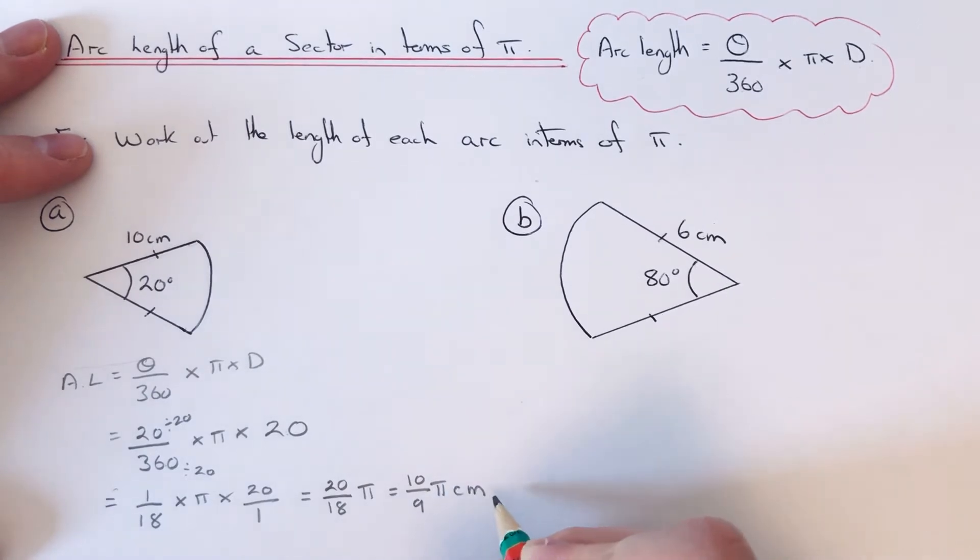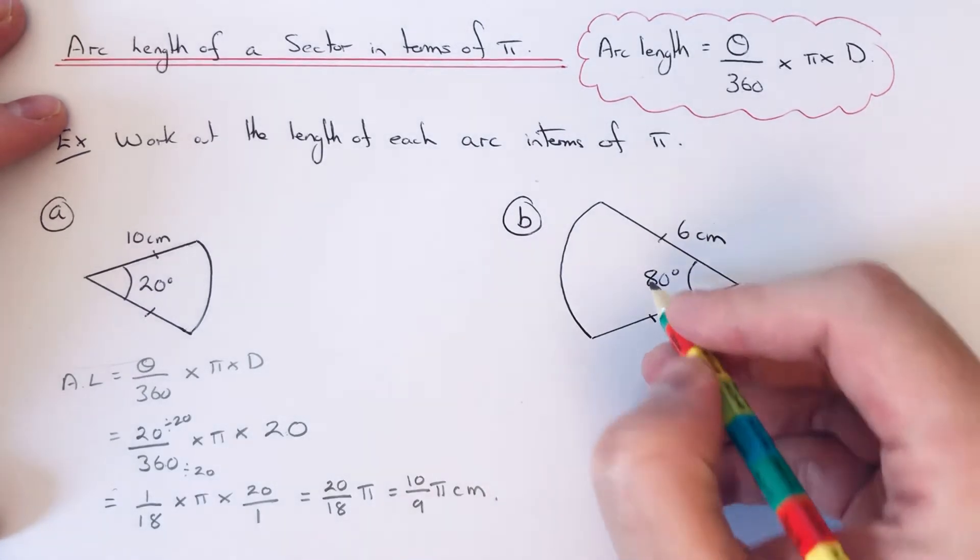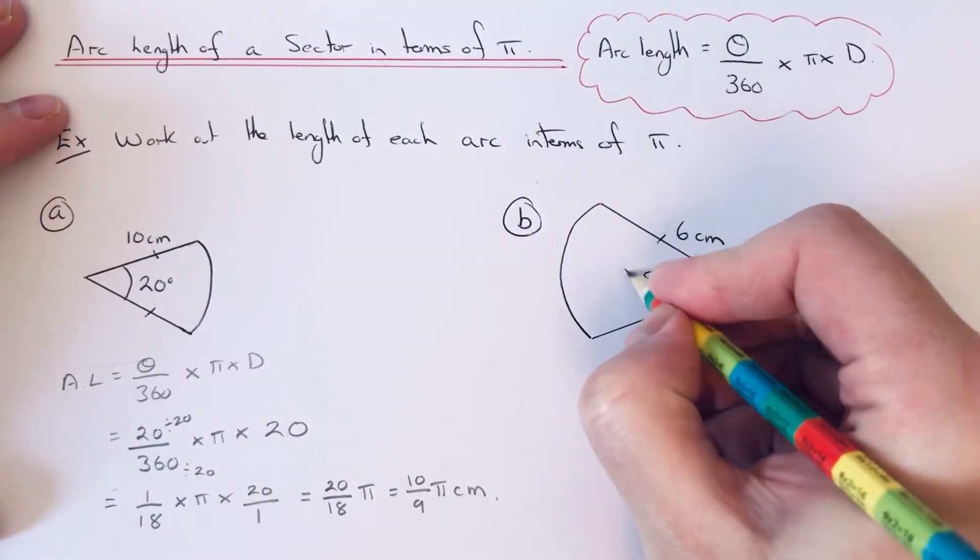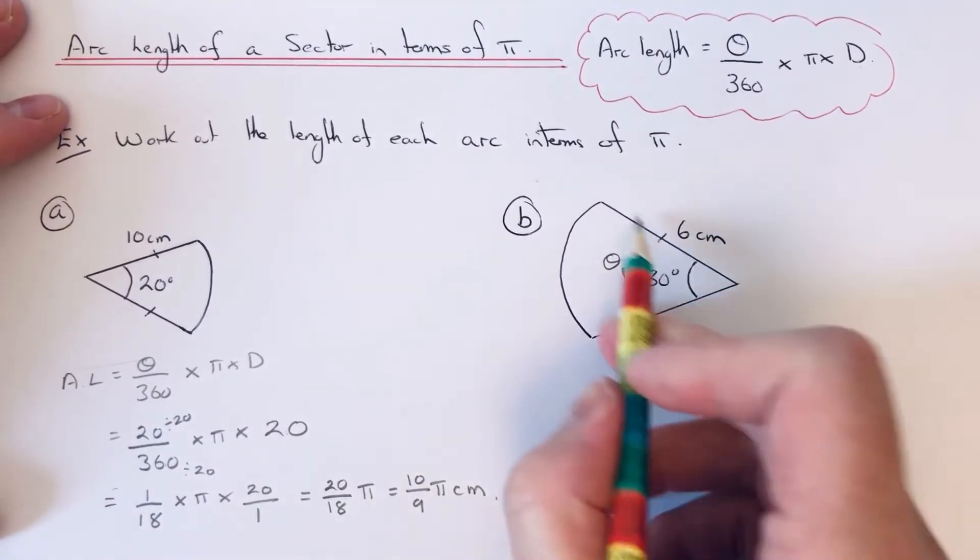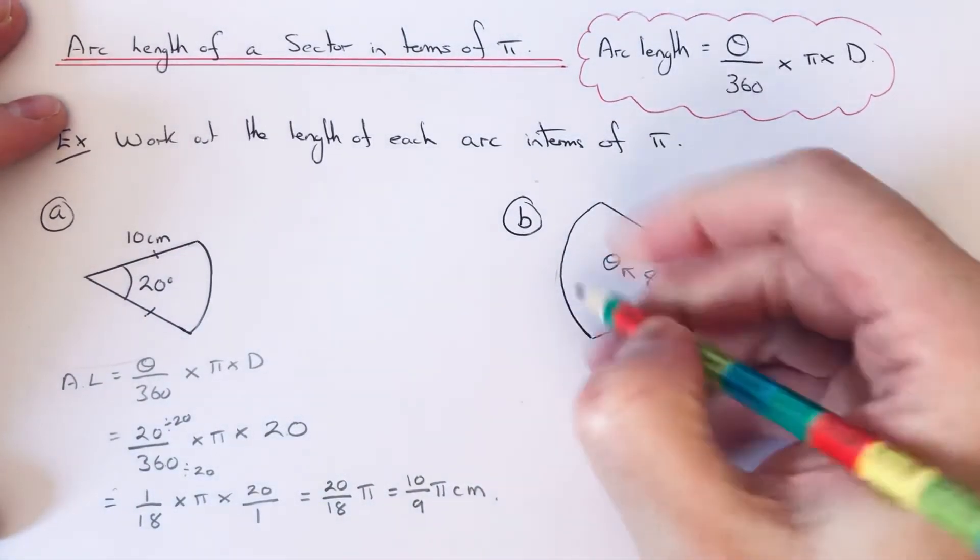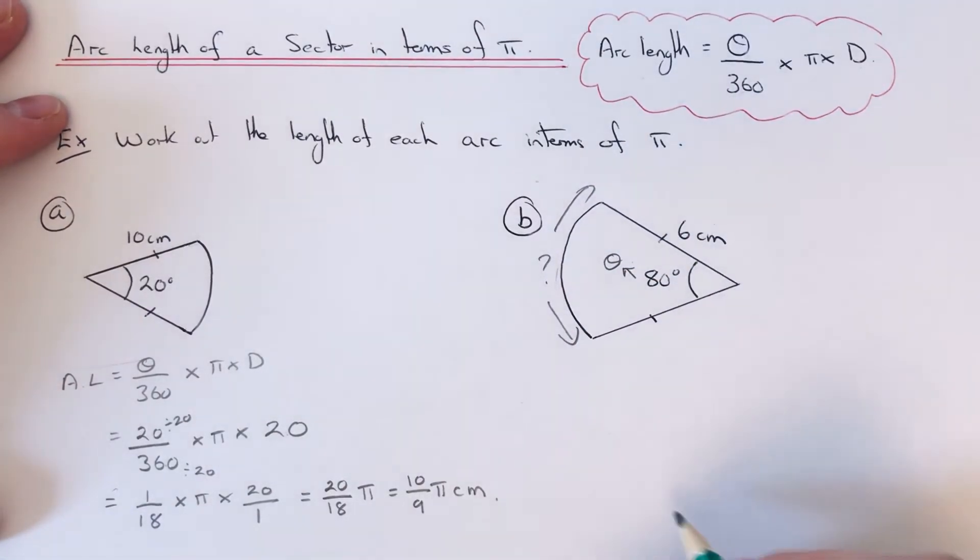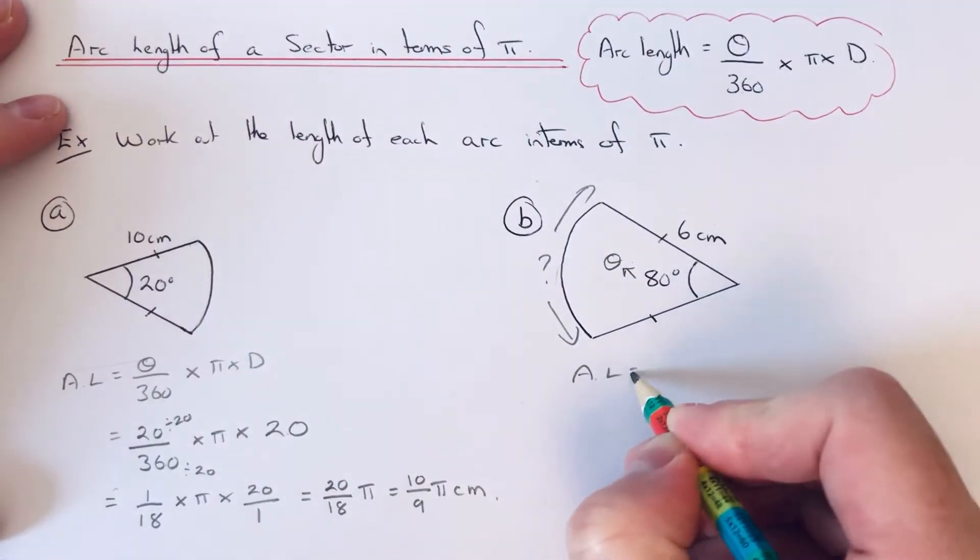Let's have a look at the second example. This time we have an inside angle of 80, so that's θ, and our radius is 6. Again, we're after the arc length, which is the length of this bit here. Let's copy our formula down.